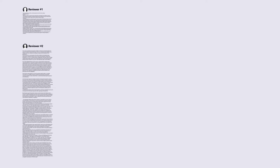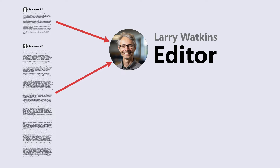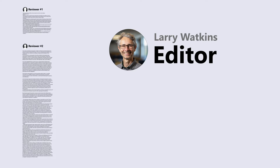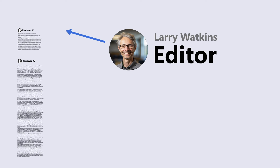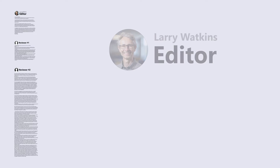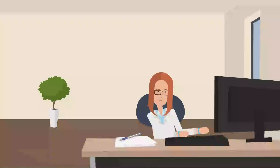The two reviewers send their very thoughtful feedback — which looks like walls of ranty text — to the editor, who takes three weeks to be kind of overloaded by all this, and then responds by adding a third wall of text summarizing the other two giant walls of text and adding some stuff they'd like to see. These three giant walls of ranty-looking text is what gets sent back to the author as feedback.